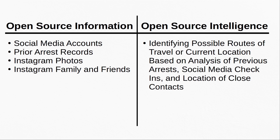Now, we can take that data and analyze it to see what places our target frequents, as well as which people they have close and continuing contact with. We could then aggregate the locations from our target's social media check-ins, their friends and family's houses, as well as places where they were previously arrested. We can then utilize this analysis and maybe predict possible routes of travel for our target.